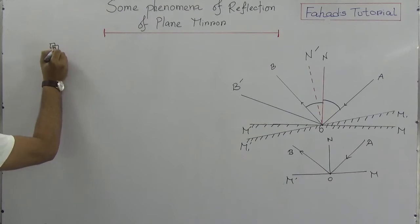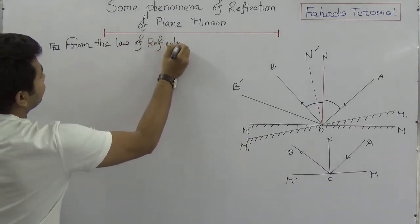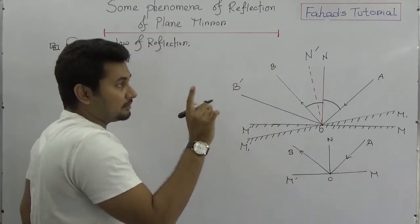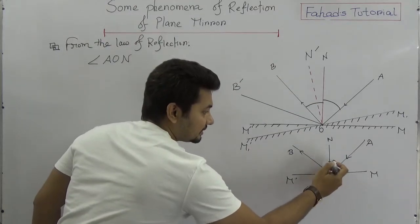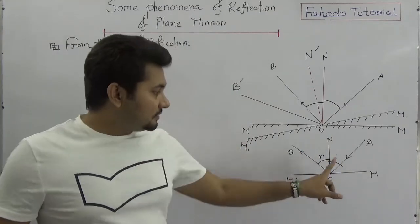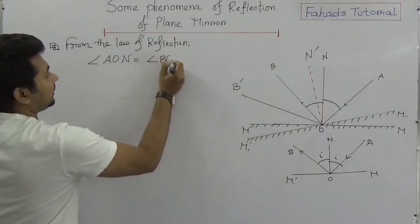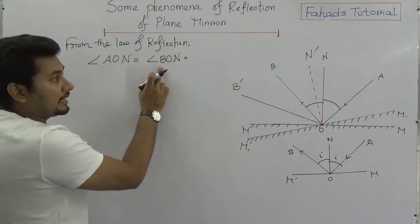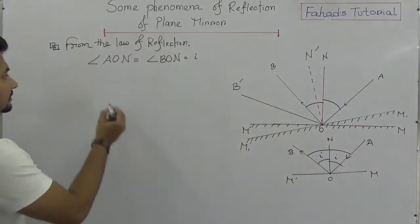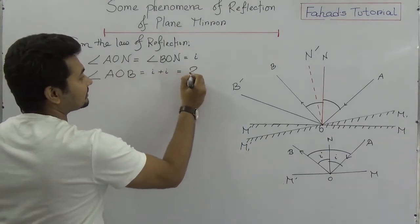From the law of reflection, we can say that angle AON equals angle BON. Just think about this: this angle and this angle are the same. So we can say that angle BON equals I, and angle AON equals I. So the total angle AOB is I plus I, which is 2I.